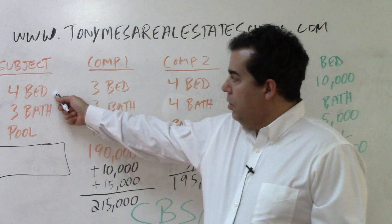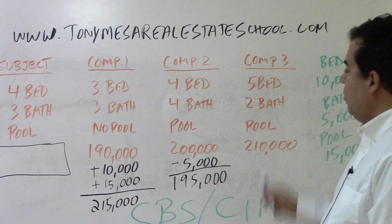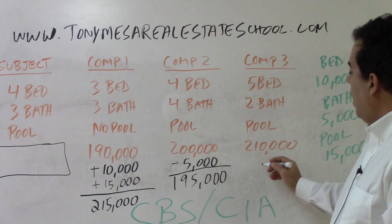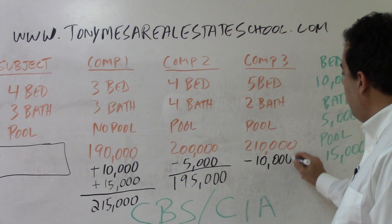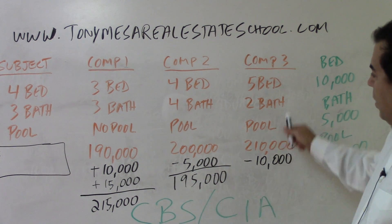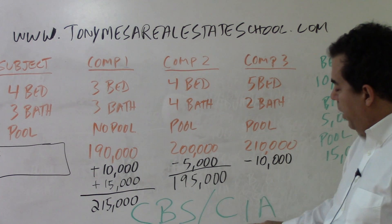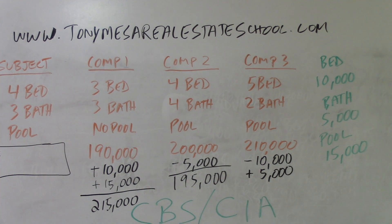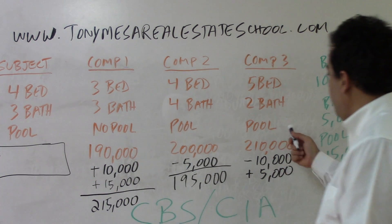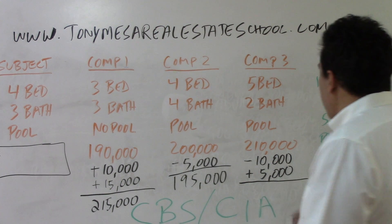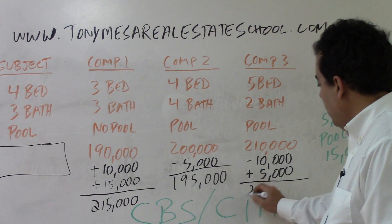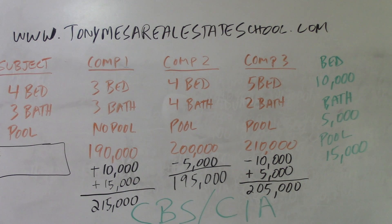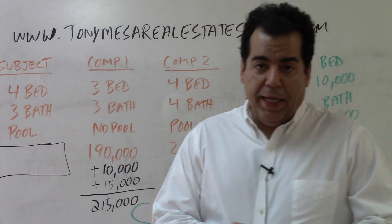For comparable number three: subject has four bedrooms, comp has five — comp is better, CBS, subtract $10,000. Subject has three bathrooms, comp has two — comp is inferior, CIA, add $5,000. Pool is the same — no adjustment. So $210,000 minus $10,000 plus $5,000 gives us $205,000 as the adjusted sales price of comparable sale number three.